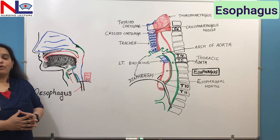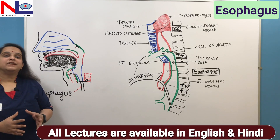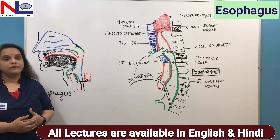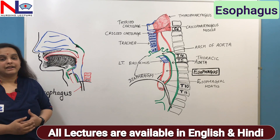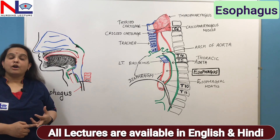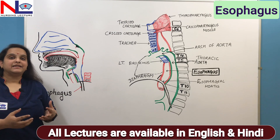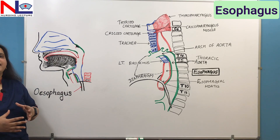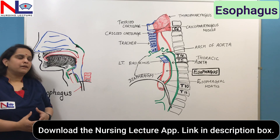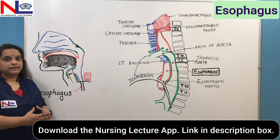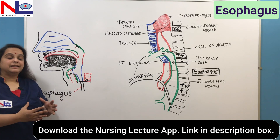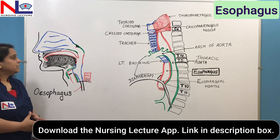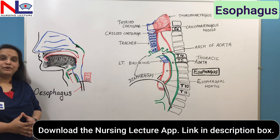Before you watch this video, I suggest that I have already made videos on the various parts of the GI tract — the mouth, the accessory organs, teeth, tongue, and the pharynx. So you can have a basic idea about the system and this video can be easily correlated with the previous ones. Please watch all those videos.